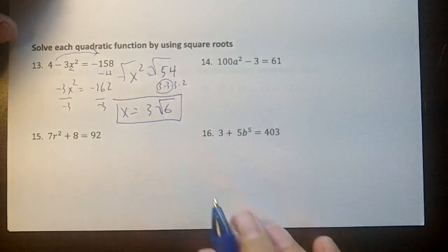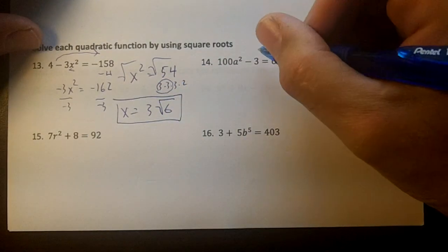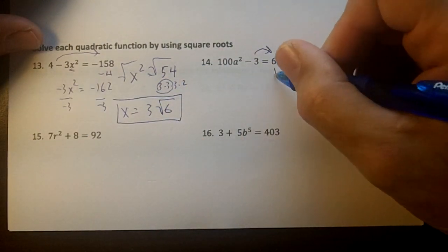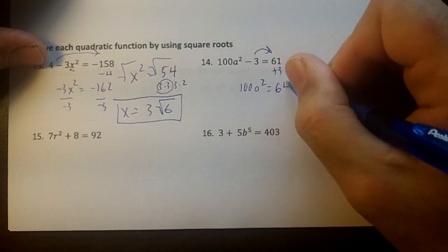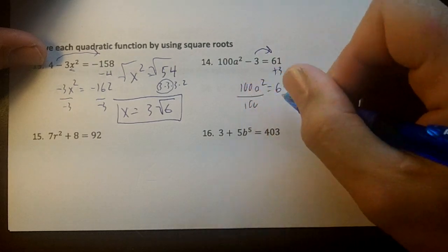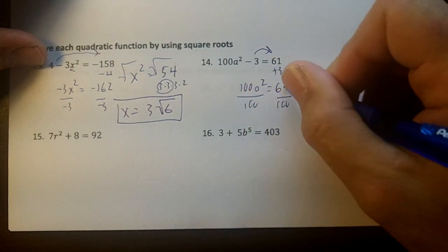On your test, I believe it's perfect squares. Okay, this problem right here, move over the 3. I'm going to get 100a squared equals 64. Divide both sides by 100, and remember, these are perfect squares, right?